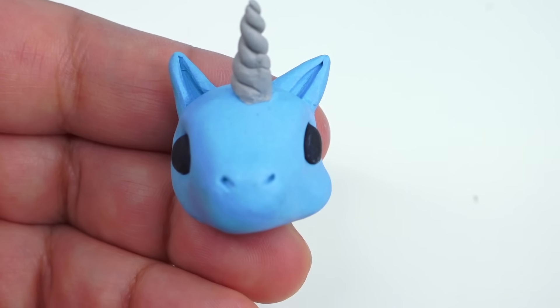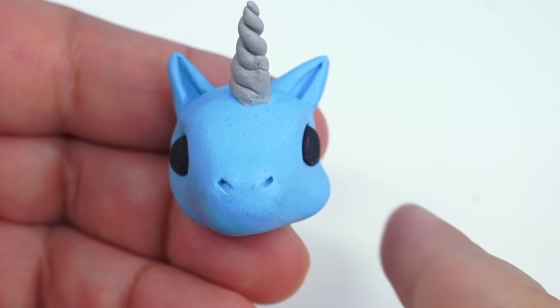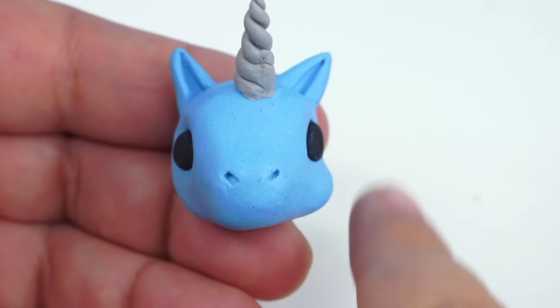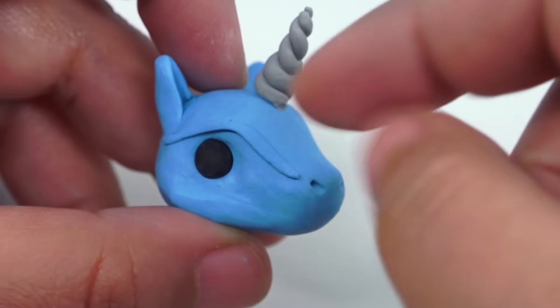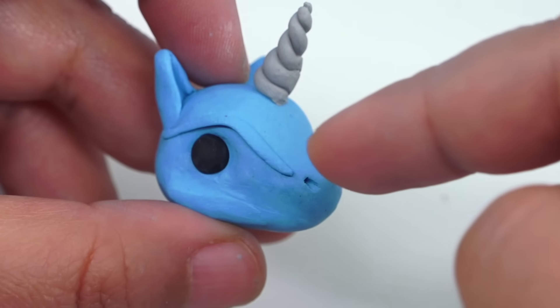After smoothing and bulking this side you can see that it is definitely way cuter than this flat part. Gives it more dimension. Now we're going to do the same thing except we're going to deepen this ridge here from the top of the eye to the nose.